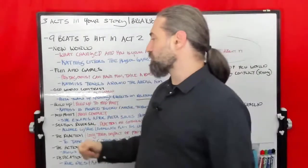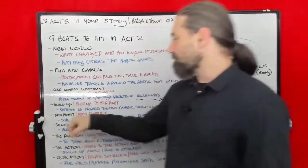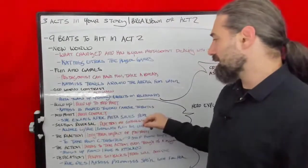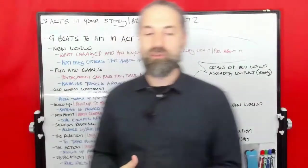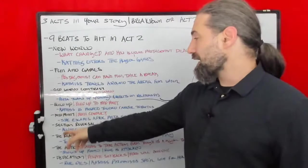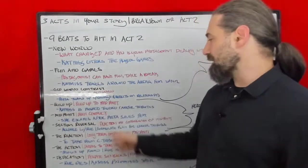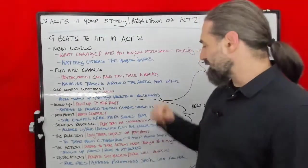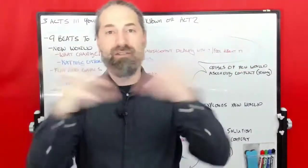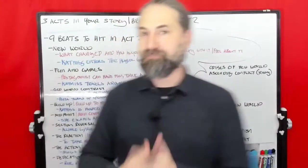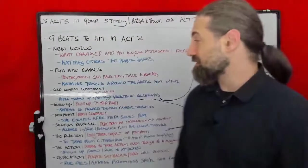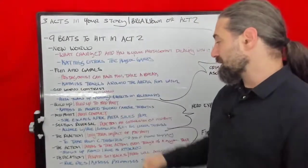The fifth beat is the midpoint — this is the main conflict. Katniss meets the career tributes. There's a fight, a battle. She almost dies. But she escapes after Peeta saves her. There's a big battle and she's like, I can't — they overpowered me. I don't know what to do. There's nothing I can do. But thank God, Peeta saved her.